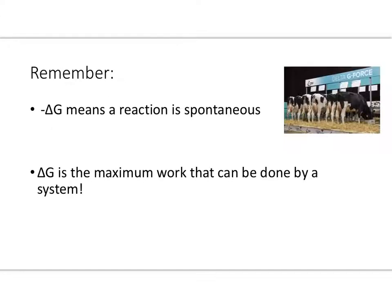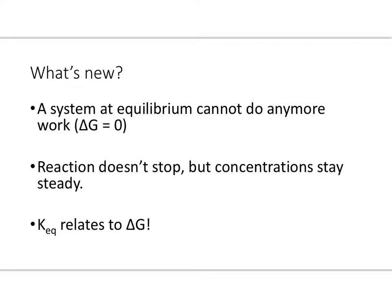So remember this: delta G is the maximum amount of work that can be done by a system. Maximum work. So it's the energy that gets released that can do work on the environment around it. And this too: negative delta G means that the reaction is spontaneous. Okay, so what's new Mr. Flugum? Well, here's the deal: if delta G is zero, that means the system's at equilibrium.